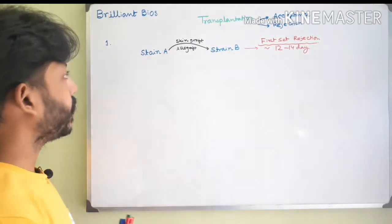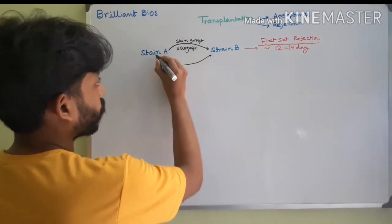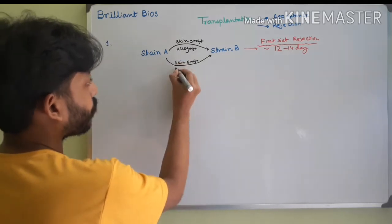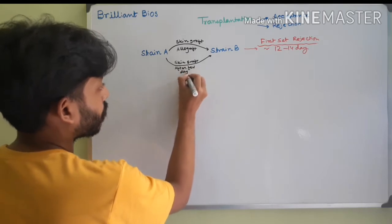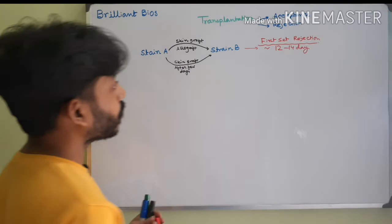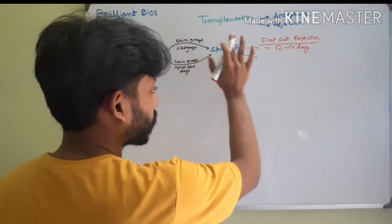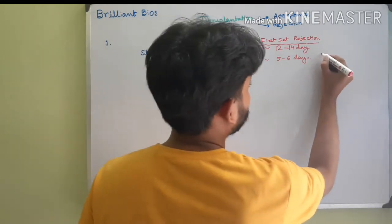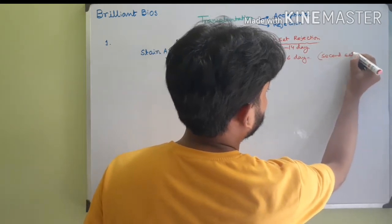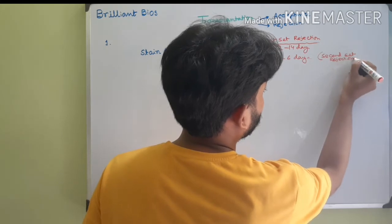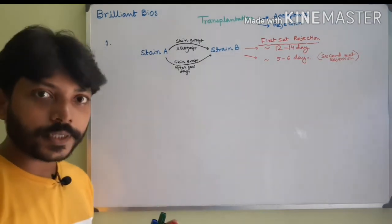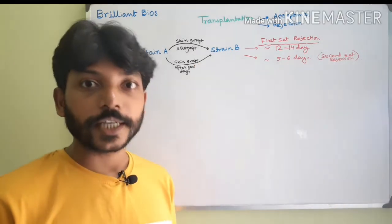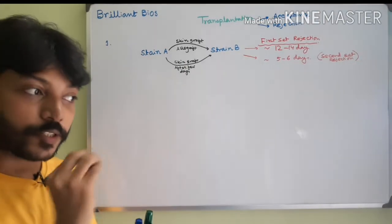After a few days, scientists again grafted skin from strain A to strain B, performing the same experiment a second time. They found that the strain B mice now rejected the skin in five to six days. This is called second set rejection. Since the rejection time was shorter the second time, scientists concluded that some memory was being generated in the strain B mice towards the strain A skin graft.